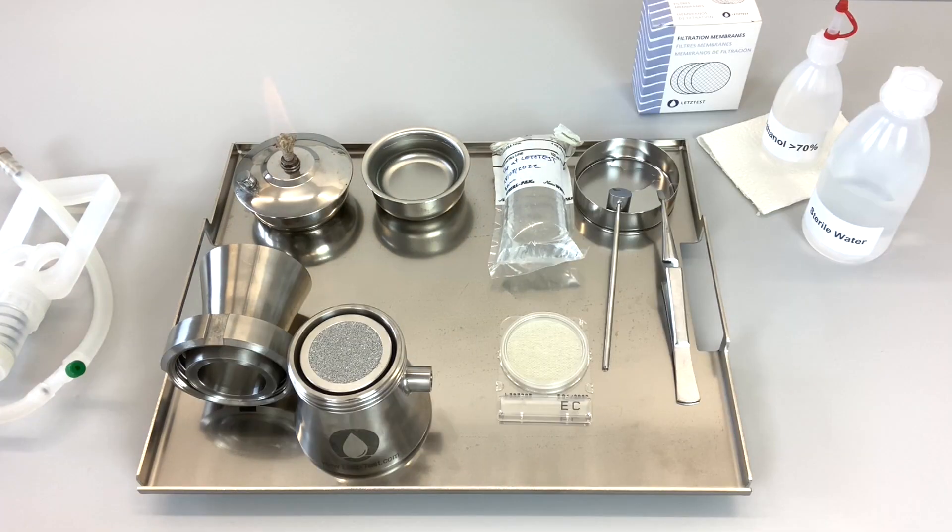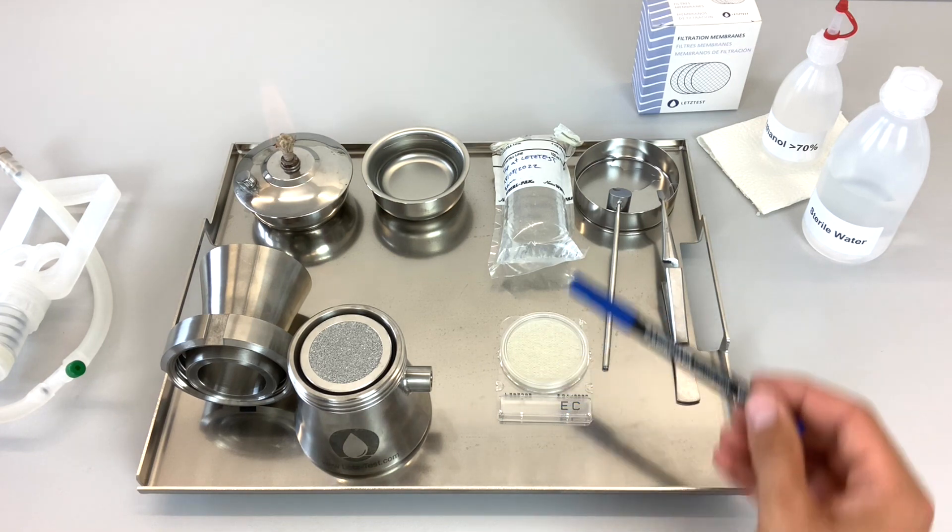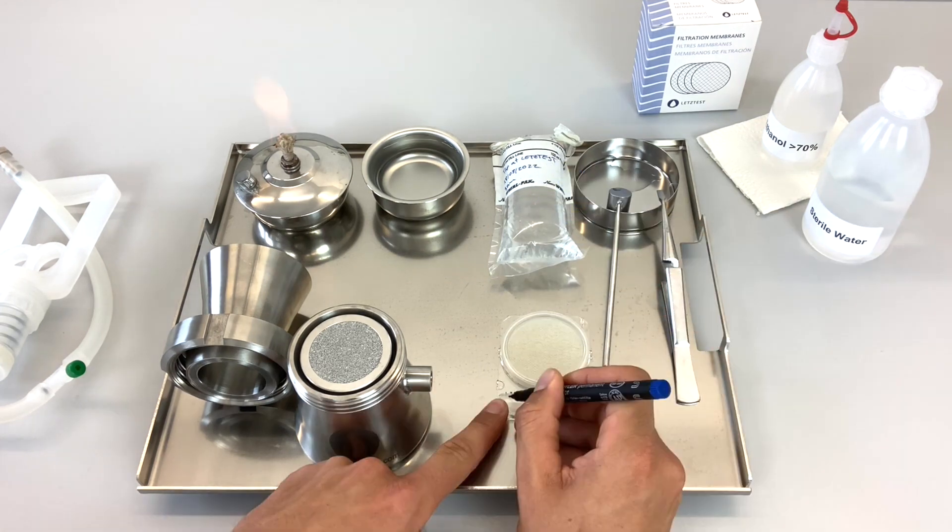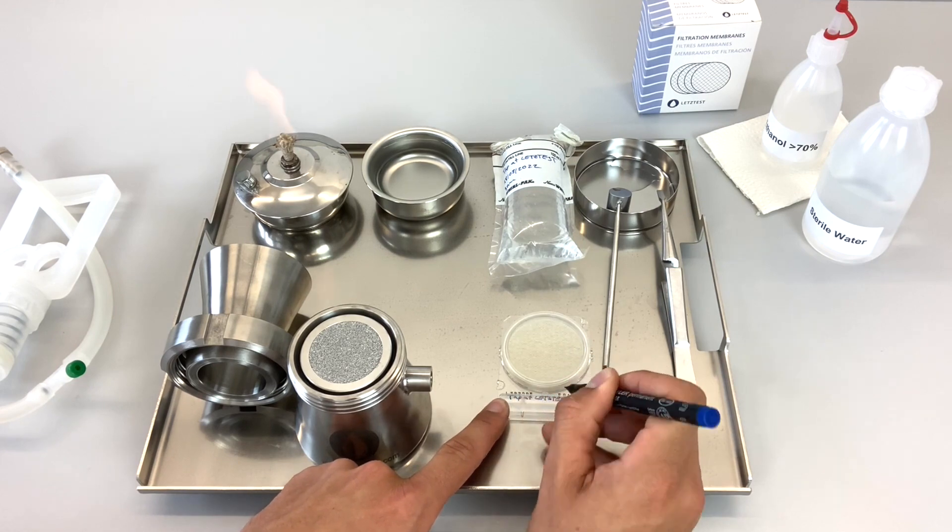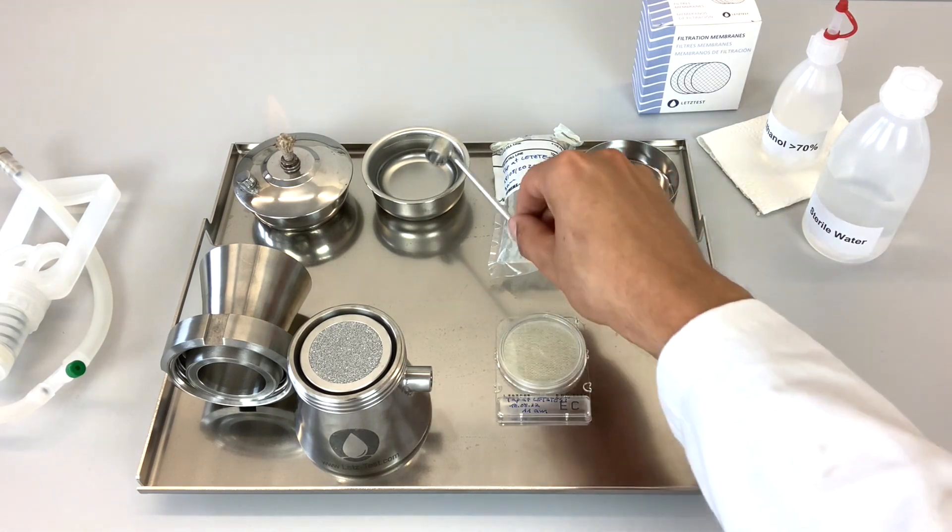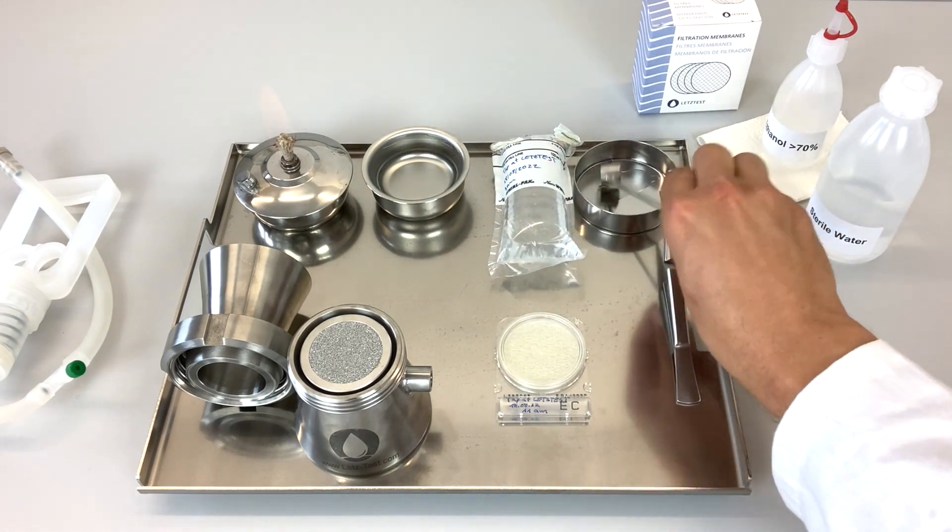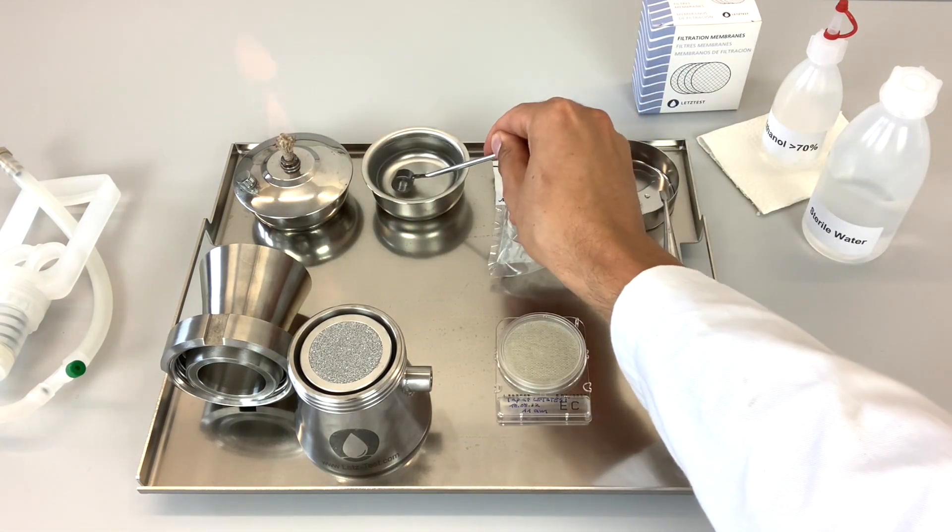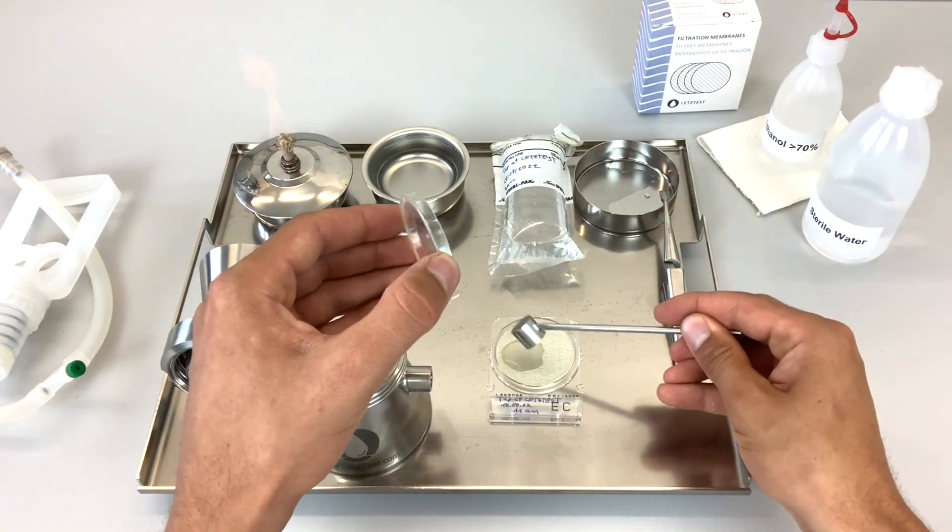As a first step, the tester can now label and then activate the dry chromogenic media plate. Label it with the information from the corresponding sample bag, but indicate the date and time of testing. Now use the one milliliter stainless steel spoon to activate the plate with one milliliter of sterile water.